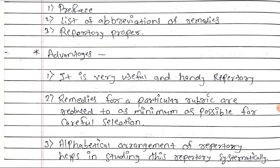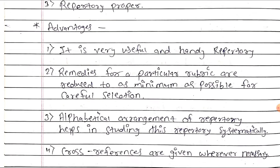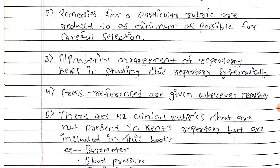Advantages: it is a very useful and handy repertory. Remedies for a particular rubric are reduced to as minimum as possible for careful selection. Alphabetical arrangement of the repertory helps in studying it systematically. Cross references are given wherever necessary. There are 42 clinical rubrics that are not present in Kent's repertory but are included in this book.